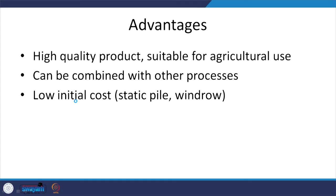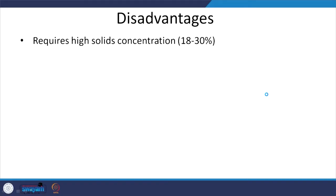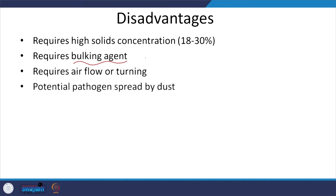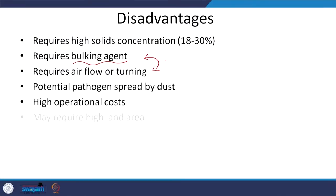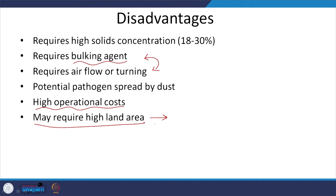In general evaluation of composting, it produces a high quality product suitable for agricultural use. It can be combined with other processes and has low initial cost. The issue in India though is that because of population density, land prices are very high, and getting large areas for composting kitchen waste and sludge is going to be a challenge. Disadvantages include: high initial solids concentration required, need for bulking agents to promote aeration, and need for airflow or turning.